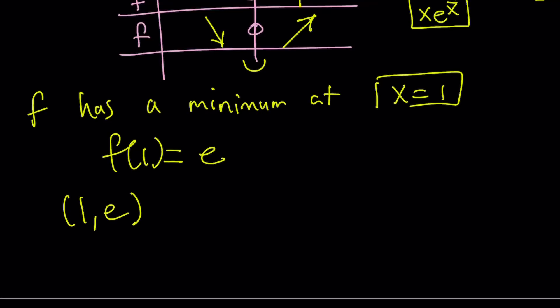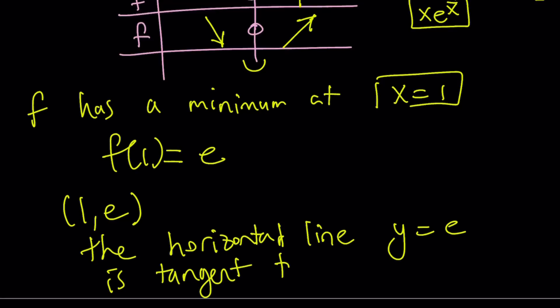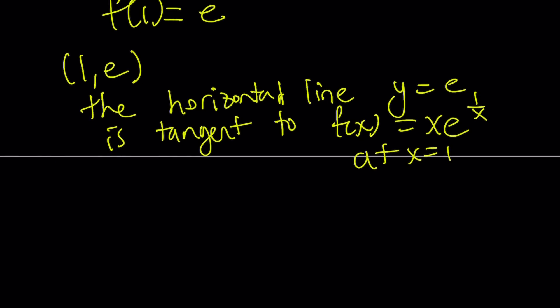In other words, the horizontal line, y equals e is tangent to f of x equals x e to the power of one over x at x equals one. What is that supposed to mean? Let's take a look at the graph and we'll see what that means.